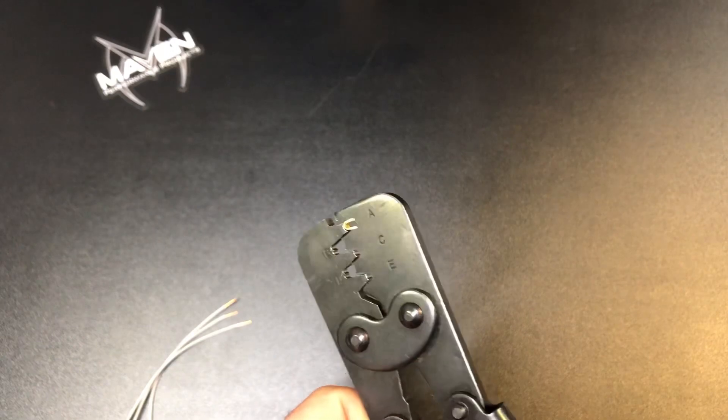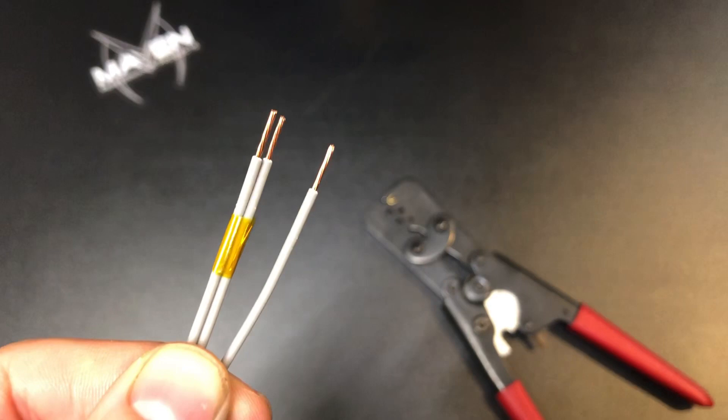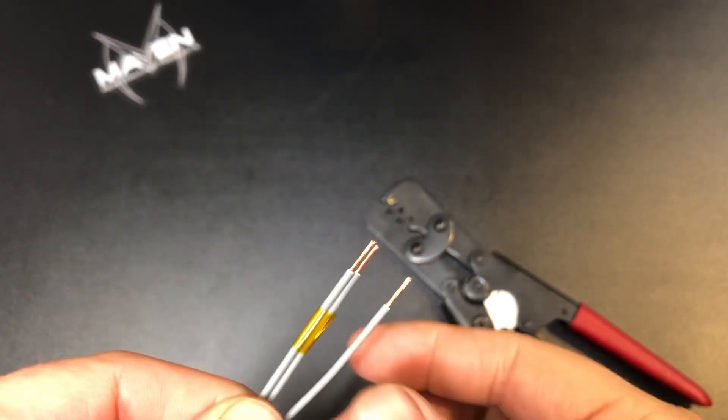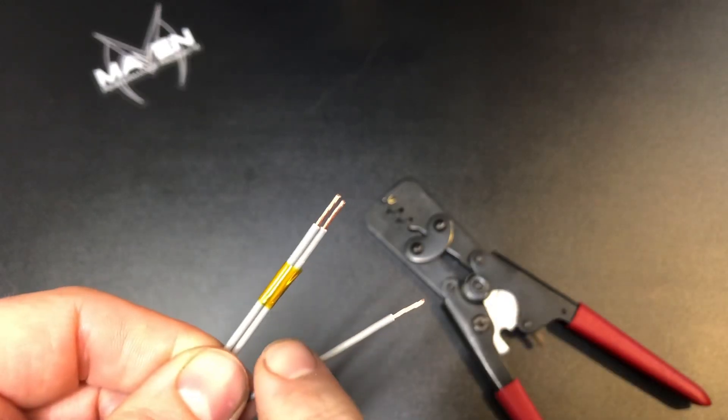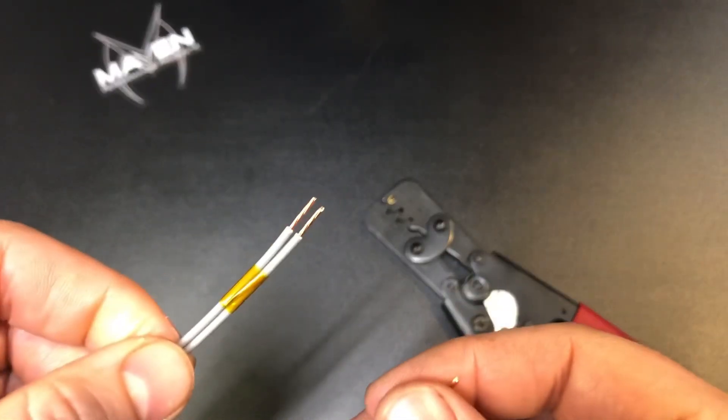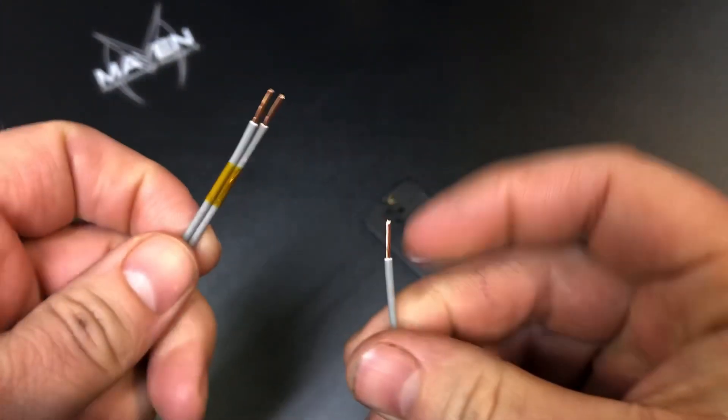Okay, so in this case we are splicing two 20-gauge wires to a single 20-gauge wire. I sometimes put a little piece of Kapton tape here. That way, when you're trying to put it into one side of the splice, it's not trying to go different directions on you.